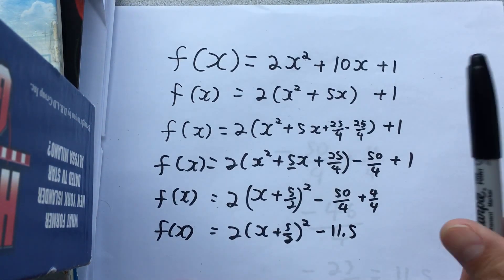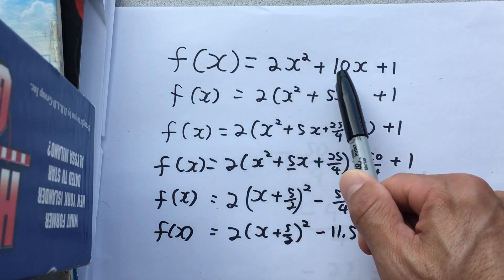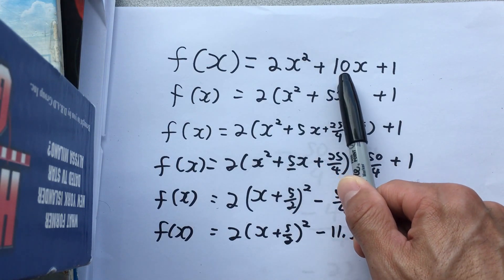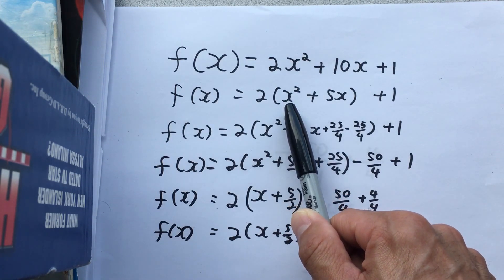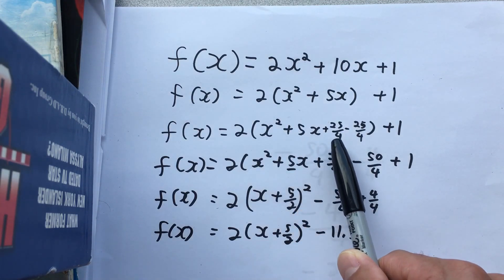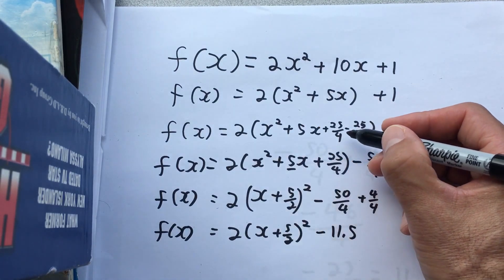To recap, we started with 2x² + 10x + 1. We divided the 2 out of each of these terms to clean this up and remove the coefficient of x squared. And then we added this carefully chosen number, which we referred to as the magic number, which makes this a perfect square.